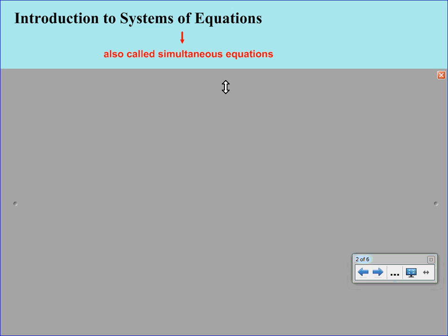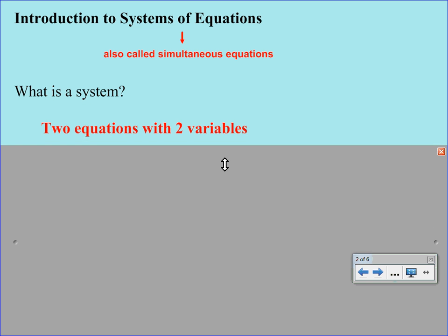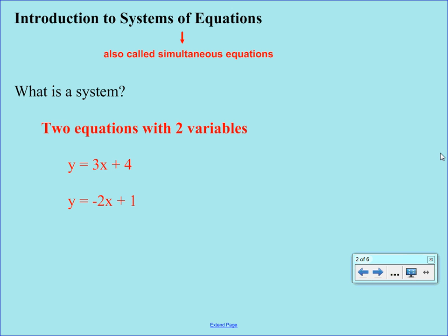Other times we might say it's two equations with two unknowns. So when we talk about what is a system, it's really just two equations with two variables. Below here you'll find an example. Our two equations are y equals 3x plus 4 and y equals negative 2x plus 1.